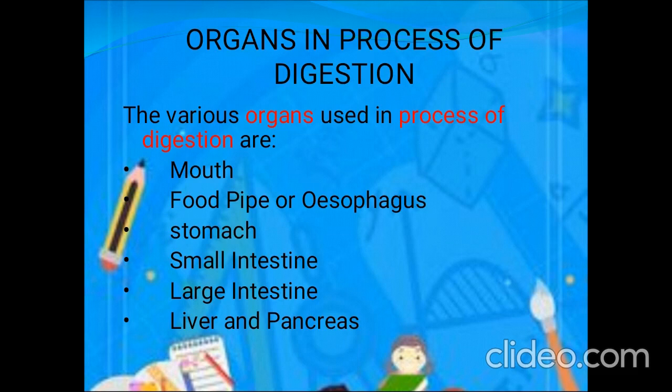With the help of the mouth we cut and chew the food properly, and with the help of saliva the food gets soft and wet so we can swallow easily. The food pipe, or esophagus, is a long muscular tube which sends food downwards to the stomach. The stomach is a large sac-like organ which contains digestive juice, and with its help food is digested into a thick paste.